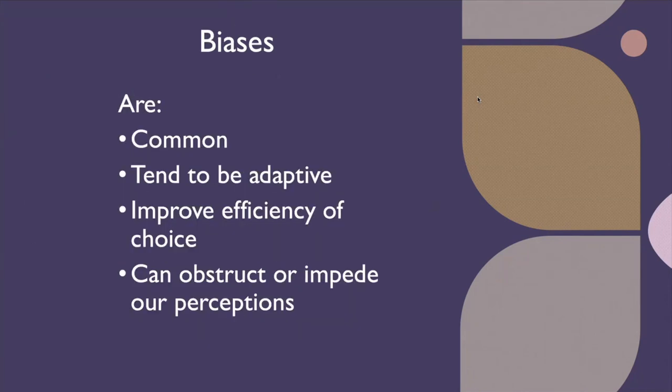The thing about biases is we all know they're common. They tend to be adaptive — a feature of the human mind where we try to cope with what we're presented in an efficient way. Although they improve the efficiency of choice, they can also obstruct or impede our perceptions. So sometimes they're beneficial, but a lot of times they can interfere with the way we perceive information.